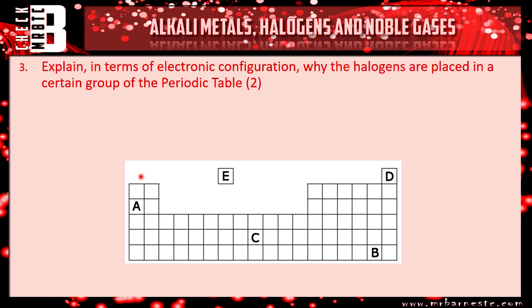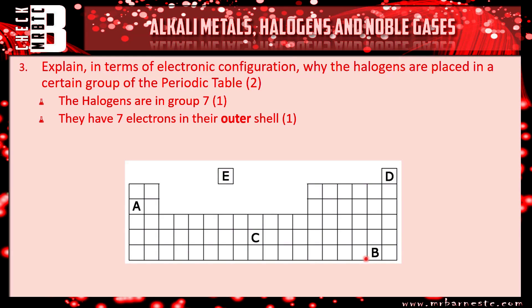Question three: explain in terms of electronic configuration why the halogens are placed in a certain group of the periodic table. The first mark is the group — you should know that group seven is the halogens. In terms of electronic configuration, how many electrons do they have in the outer shell? Seven. One mark for being in group seven, and one mark for having seven electrons in the outer shell. Make sure you say 'outer shell' — don't just say they have seven electrons.